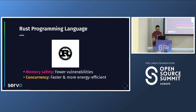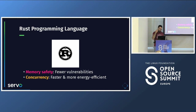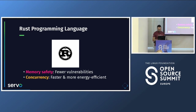Servo is written in Rust, which is special because the other popular web rendering engines are all open source but written in C++. Rust has memory safety features and concurrency features that allow you to create programs with fewer vulnerabilities, that could run faster and be more energy efficient.